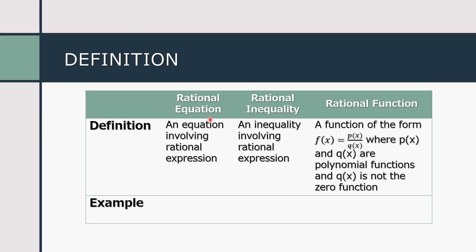We have rational equation, rational inequality, and rational function. A rational equation is an equation involving rational expressions. Our example is (x + 4)/(x − 1) = 1/5. As you can see, two expressions are equated or related with the equal sign. A rational inequality is an inequality involving rational expressions. Our example is (x − 2)/5 > 3, where two expressions are related by an inequality symbol — the greater than sign.